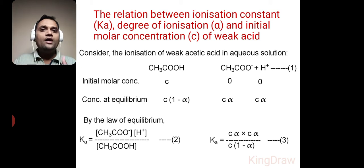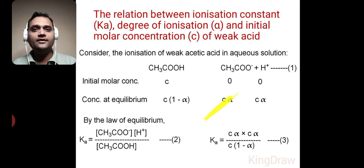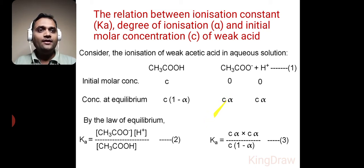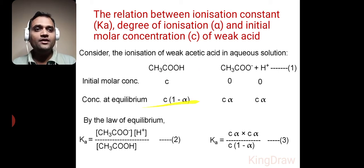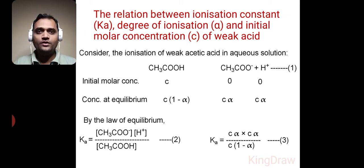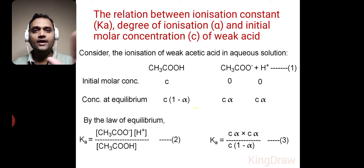After ionization, at equilibrium, we consider the concentrations. Suppose alpha is the degree of dissociation. At equilibrium, the concentration of acetate ion is C·alpha, and that of H⁺ is also C·alpha. The degree of dissociation can be maximum 1, so the concentration of acetic acid at equilibrium is C(1 − alpha).